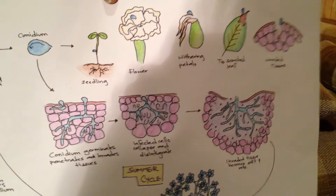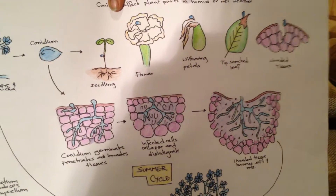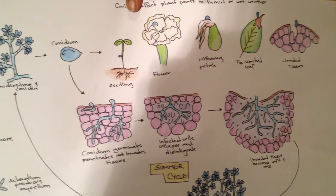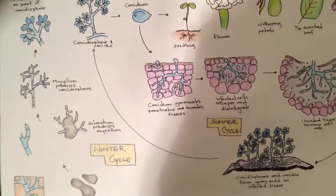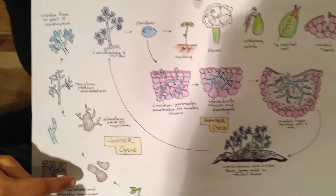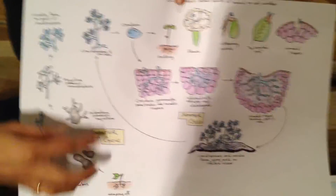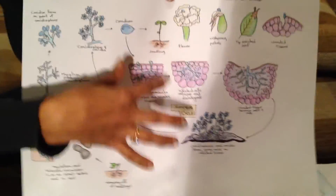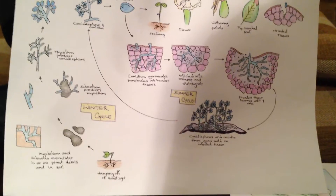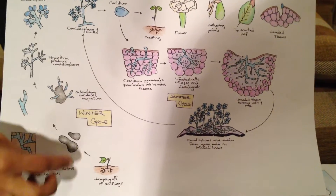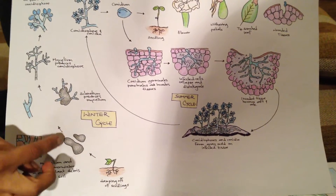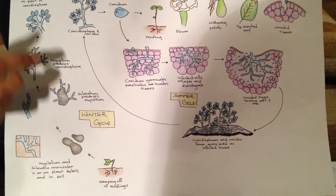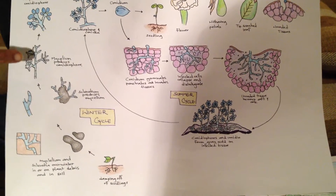I thought it would be wise to do a disease cycle. This is just color pencils to show what happens during the summer — the infection — and then during the winter, since it's in the sclerotium family. It'll overwinter in the soil on sclerotia or on mummified fruit.